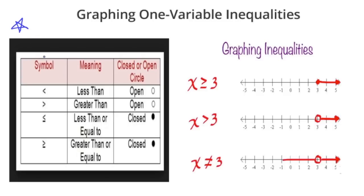The first column has the different inequality symbols and the next column has their meanings. The first symbol means less than. The next symbol means greater than. The third symbol means less than or equal to — that little bar is the difference between less than and less than or equal to. And then this one is greater than or equal to. When graphing inequalities, you need to know how to graph them with either open or closed circles.